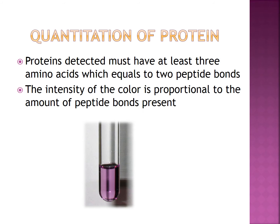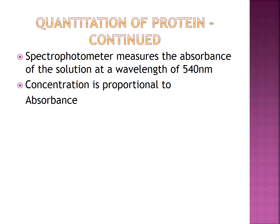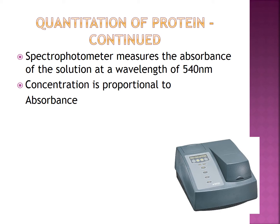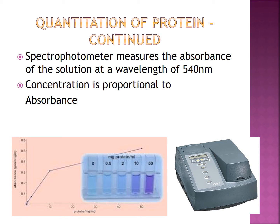Thanks Brian. Now that we have a positive test for protein, how exactly do we quantitate our protein sample? How do we know how much protein is present in our solution? The intensity of the color is proportional to the amount of peptide bonds present in the solution. To determine the total amount of protein in our sample, we need a spectrophotometer, a series of standards, and the patient's sample. A spectrophotometer measures the absorbance of the solution at 540 nm. The concentration is proportional to the absorbance, which gives us the concentration of our protein. We will then use our standards to establish a calibration curve, which will tell us the exact amount of protein in our sample.